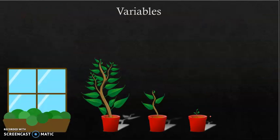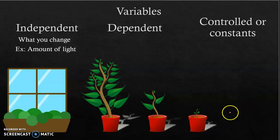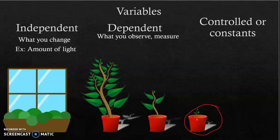There are three different types of variables to be aware of: independent variables, dependent variables, and controlled or constant variables. An independent variable is what you change in an experiment. Since my question is how does light affect plant growth, I'm going to change the different amounts of light — that's my independent variable. Plant three is getting the least amount. My dependent variable is what I observe or measure. I'm going to measure the height of the plants, so the height of each plant is my dependent variable.